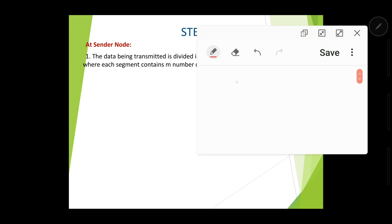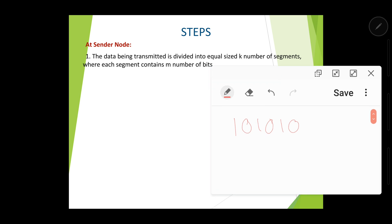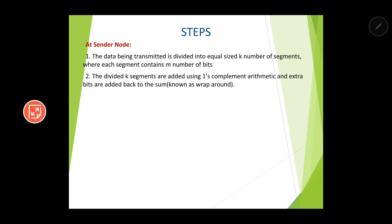This is similar to two-dimensional parity checking. For example, if our data has six bits, it will be divided into equal-sized segments. We take k as 2, meaning for each segment we take two bits each. This is the first step — we fragment the data units and divide them into k number of segments. After that, the divided k segments are added using one's complement arithmetic and any extra bits are added back to the sum.